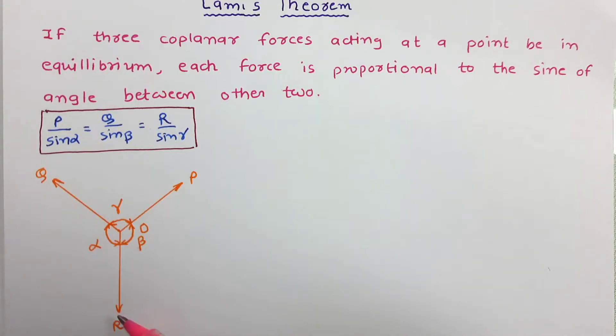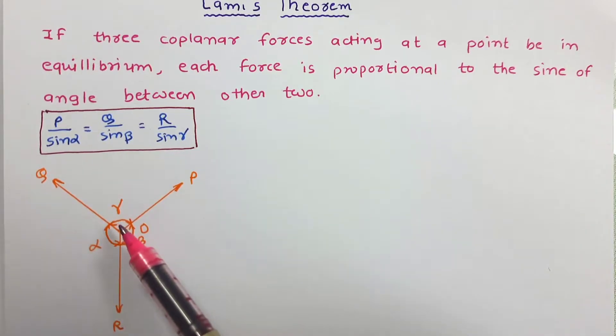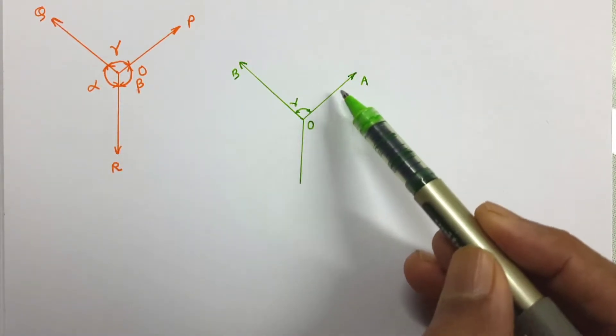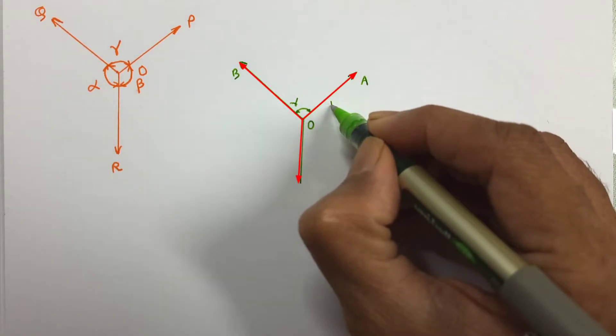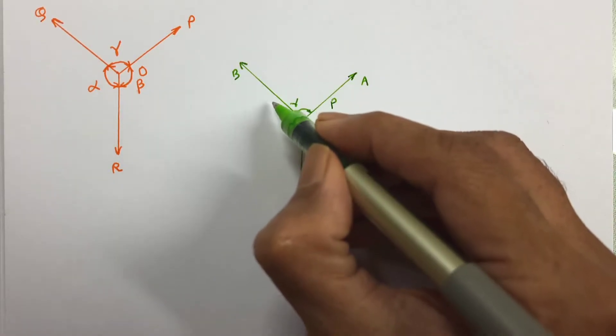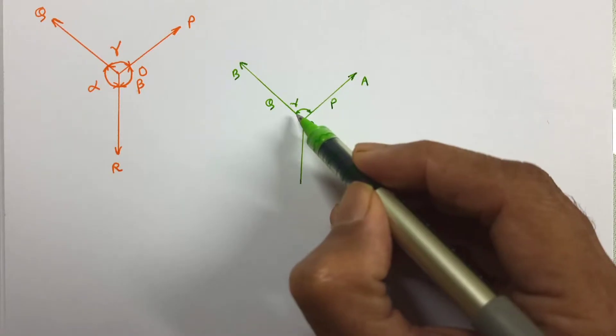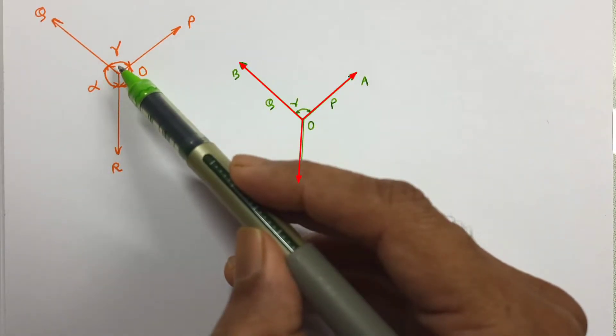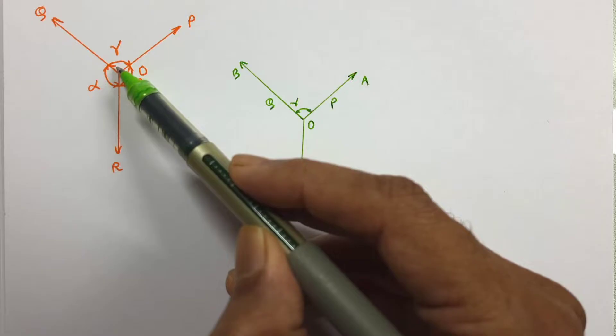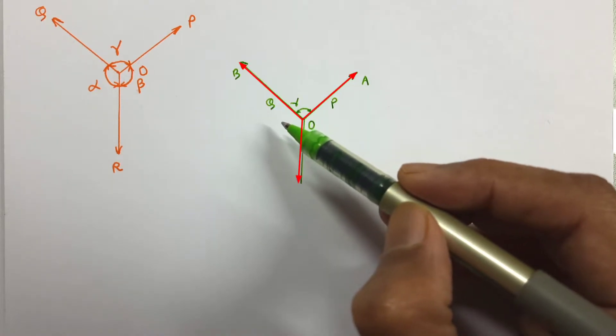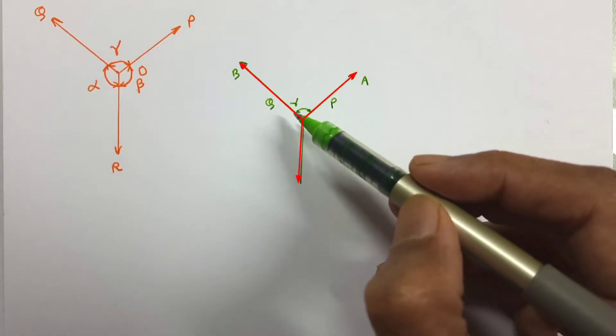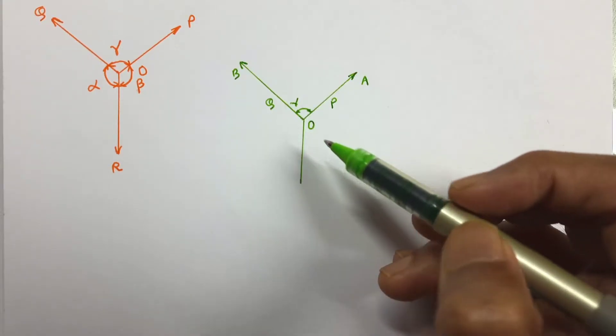Now let us draw force P and force Q graphically to make a parallelogram. Here two lines OA and OB are drawn. This OA represents force P, and OB represents force Q. The angle between force P and Q has been taken gamma according to the original force. Now let us consider these two forces P and Q as adjacent sides of parallelogram. So first let us complete the parallelogram.